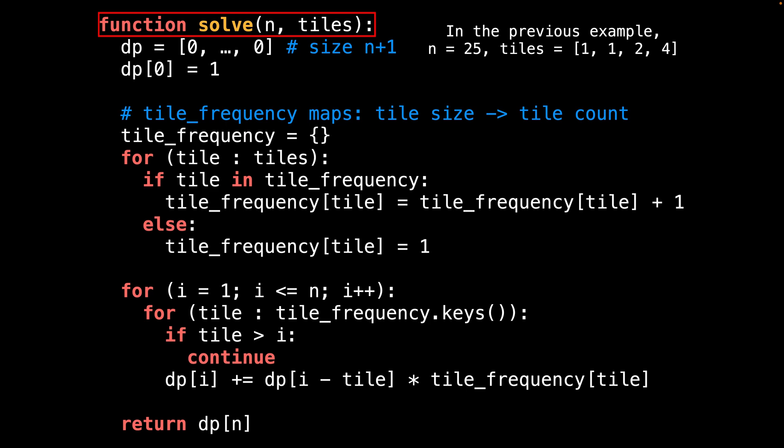In the example at the beginning of the video, we would have specified n = 25, and the tiles list equal to the numbers 1, 1, 2, and 4. To start with, I declare an array called dp of length n+1 to store all the solutions for the values of f(n). Since we know the value for f(0), we immediately set the value of f(0) to equal one as the base case.